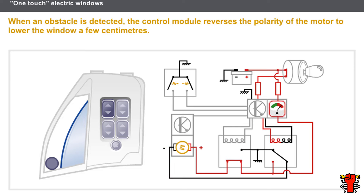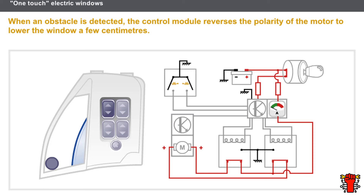The control module reverses the polarity of the motor to lower the window a few centimeters. Hall effect sensors in the motor enable the control module to determine the high and low position of the window. At the end of travel, the control module deactivates the anti-pinch system.